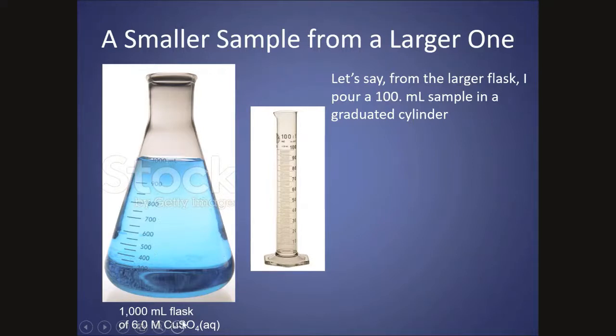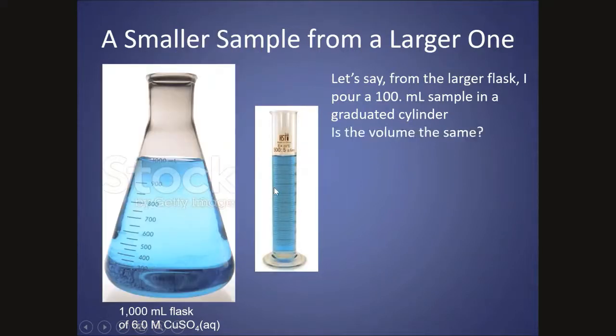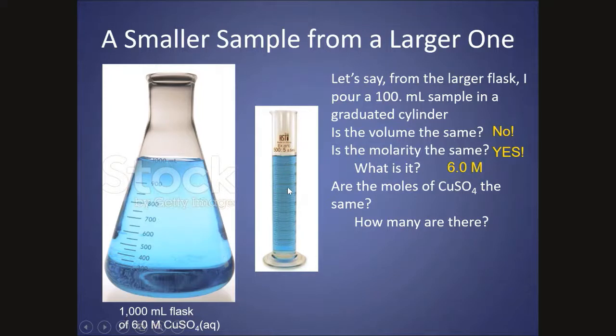So this is a 1000 milliliter flask containing 6 molar copper sulfate. Let's say I pour it into a 100 milliliter graduated cylinder. Obviously, the volume is no longer the same. Is the molarity the same? Yes. These two things would both have the same molarity. So this is 6 molar. This would be 6 molar. Would the moles be the same? No. I obviously are going to have less moles. Though the ratio of moles over volume is the same, I have less volume, so I'd have less moles.